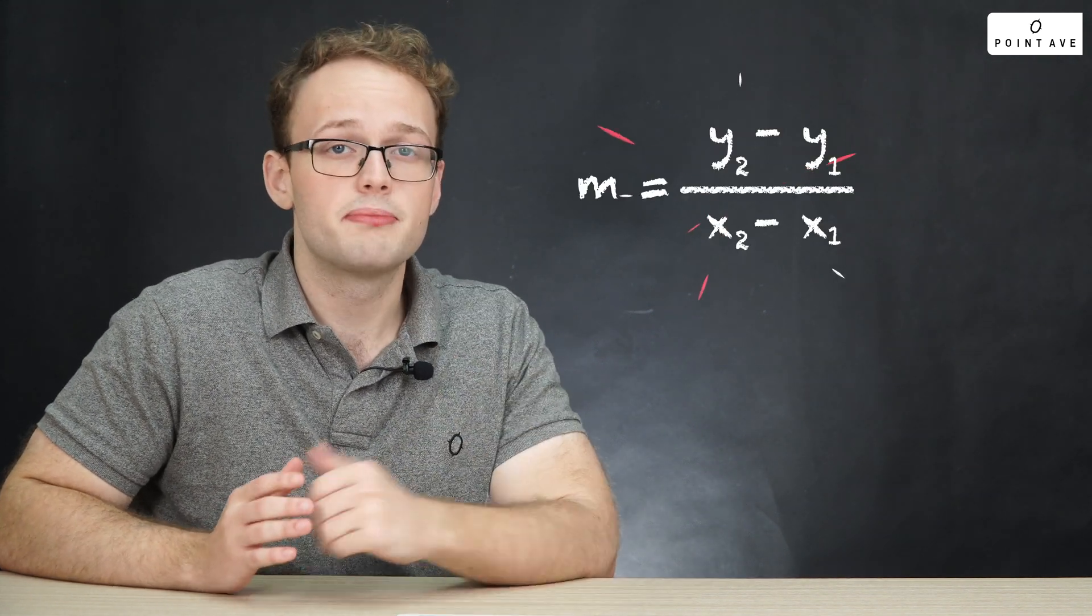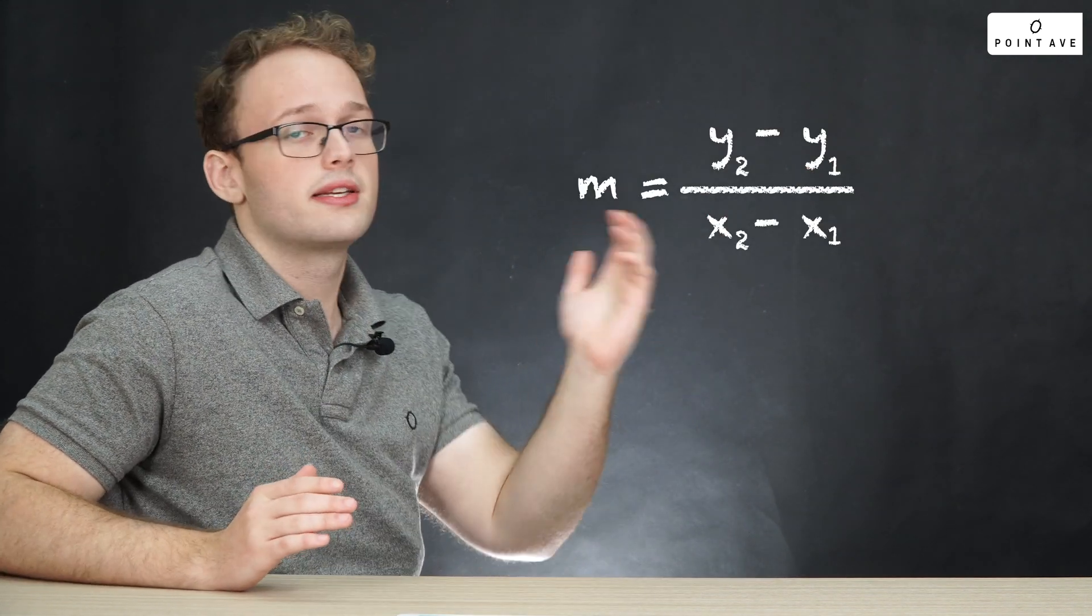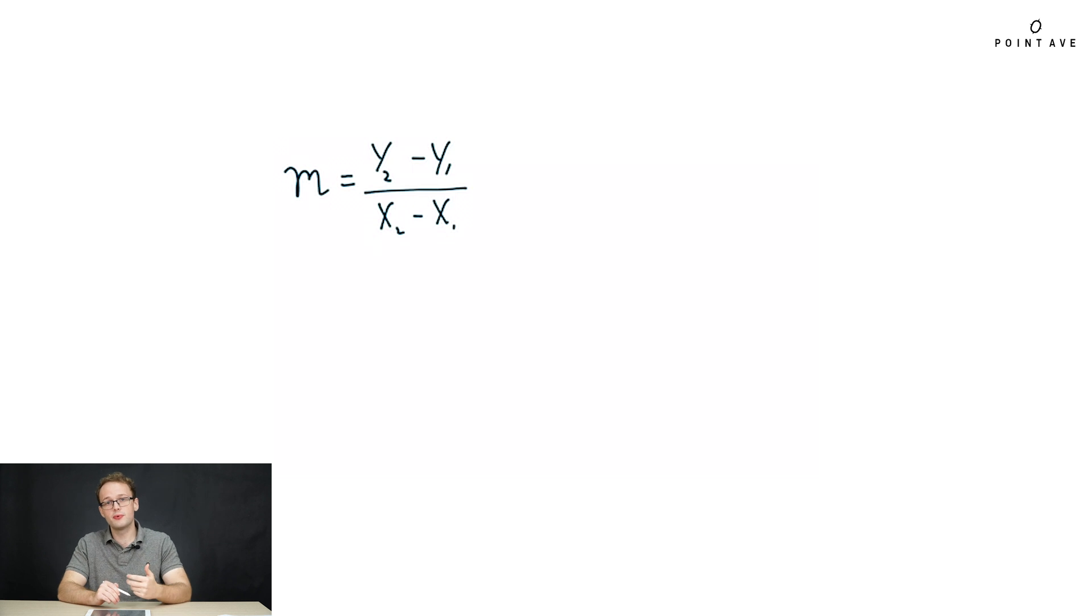So now that we have our two coordinate points, what can we actually do with them? Well, we can use them to first find our slope by plugging into the slope equation that we see here. We can use this equation whenever we're given two coordinate points, x1, y1, and x2, y2, as we saw before.